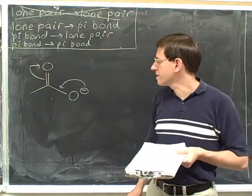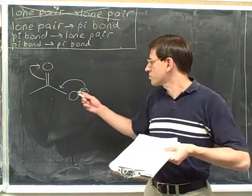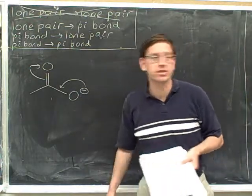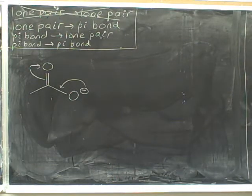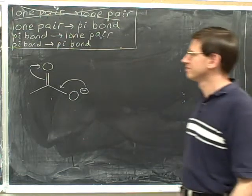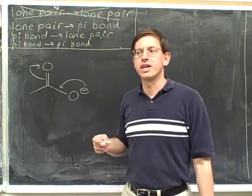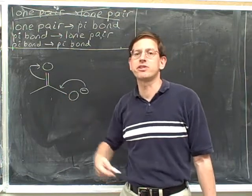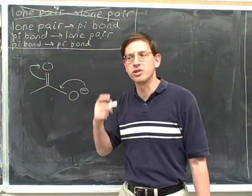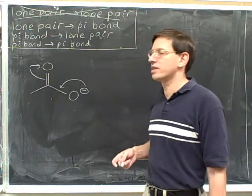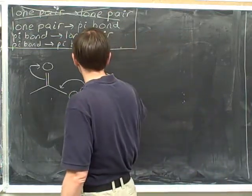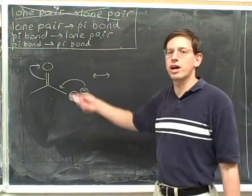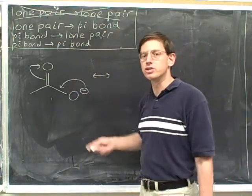Try to draw the resonant structure that is suggested by these electron pushing arrows. I hope that you paused the video and gave that a shot. Please remember to pause the video after each problem and try it on your own before you proceed. I hope that you've been using the techniques we've been going over. One key technique is the redraw and modify technique, so we'll start by redrawing the picture, including redrawing the arrows.